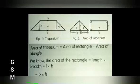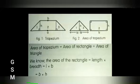The area of the trapezium is equal to the area of the rectangle plus the area of the triangle. We know the area of the rectangle is equal to length into breadth, which is equal to b into height.